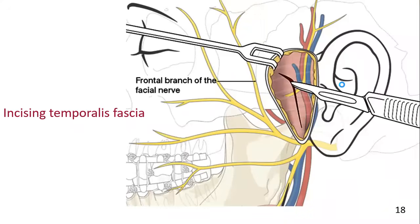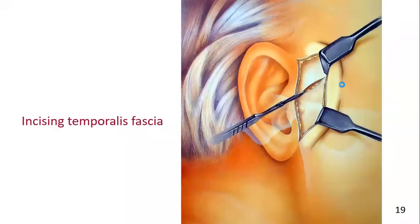Attention again turns to the portion of the incision above the zygomatic arch. Make an oblique incision parallel to the course of the frontal branch of the facial nerve through the superficial layer of the temporalis fascia above the zygomatic arch. With the flap retracted anteriorly, an oblique incision is made through the superficial layer of the temporalis fascia beginning from the root of the zygomatic arch just in front of the tragus, directed anterosuperiorly toward the upper corner of the retracted flap. The fat globules contained between the superficial and deep layers of the temporalis fascia are then exposed.